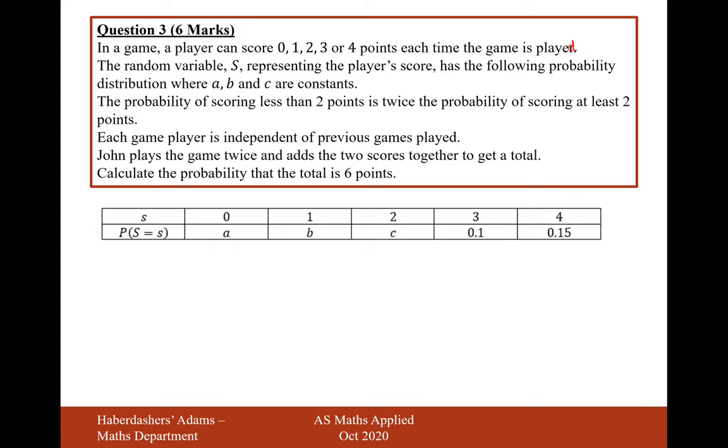The probability of scoring less than 2 points is twice the probability of scoring at least 2 points. So this here and this here, let's work it out. The probability of scoring less than 2 points is twice as likely, so we have to collect all of this probability here. That's going to be C plus 0.25, multiply it by 2, and that will give you the exact value of this probability here.